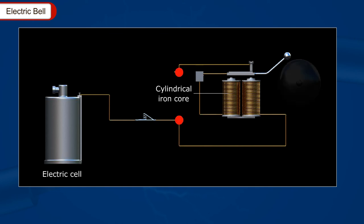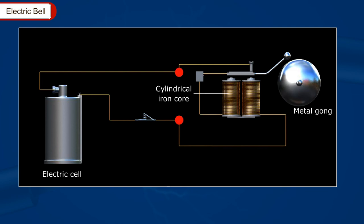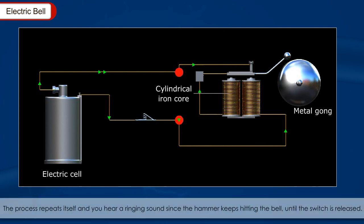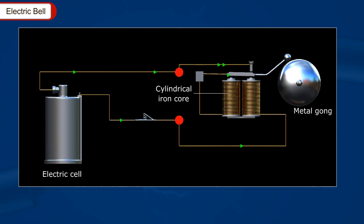Working of an electric bell: When you press the switch, the electric current flows through the coil and the iron strip acts as an electromagnet. The iron strip attracts the magnet towards it. The hammer hits the bell and produces a sound. When you leave the switch, the circuit breaks and the hammer moves towards the iron strip. At this point, the iron strip stops working as an electromagnet. The hammer is pulled back to its original position. The process repeats itself and you hear a ringing sound since the hammer keeps hitting the bell until the switch is released.